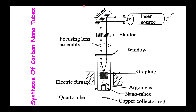We use a laser source that produces a high-powered beam, which is focused using lenses and mirrors. The setup consists of a quartz tube with an electric furnace on two sides providing heat. The graphite sheet is heated to 1200 degrees Celsius, causing the carbon to evaporate and collect on the copper collecting rod, forming carbon nanotubes.